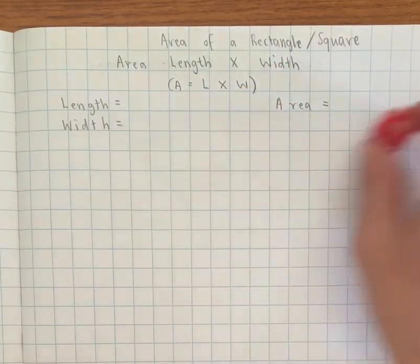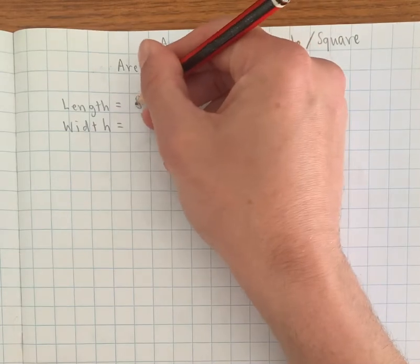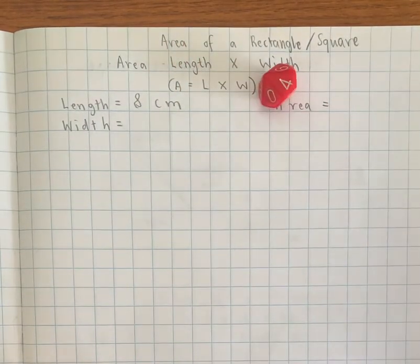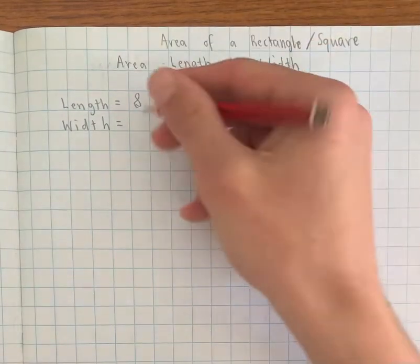So I've got an 8, so my length is going to be 8 centimeters, and my width is going to be 4 centimeters.